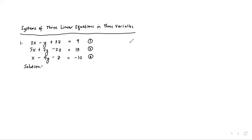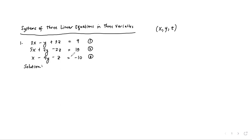Hello, everyone. In this video, we shall discuss how to solve systems of three linear equations in three variables. When we have three variables, the solution set of the system would be an ordered triple x, y, z that satisfies all three equations. When you substitute the values of x, y, z in the equations, the equality must be achieved.